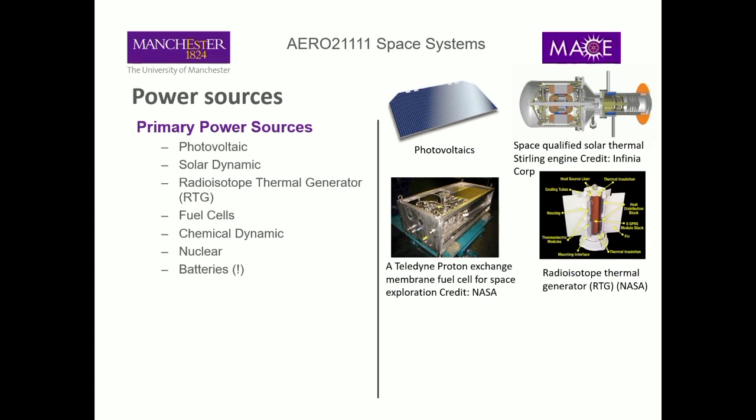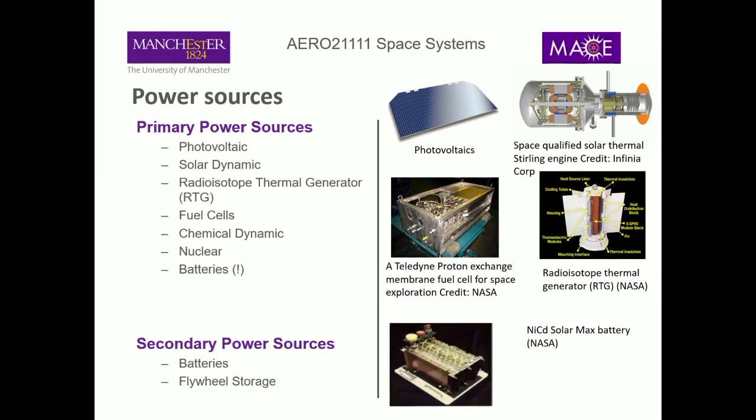There are different types of battery chemistry with different performances. You could also store energy in a flywheel — when your primary source is getting energy from the sun, you can store that in the kinetic energy of a flywheel, keep it spinning, and then take that energy back out and convert it into electrical power.